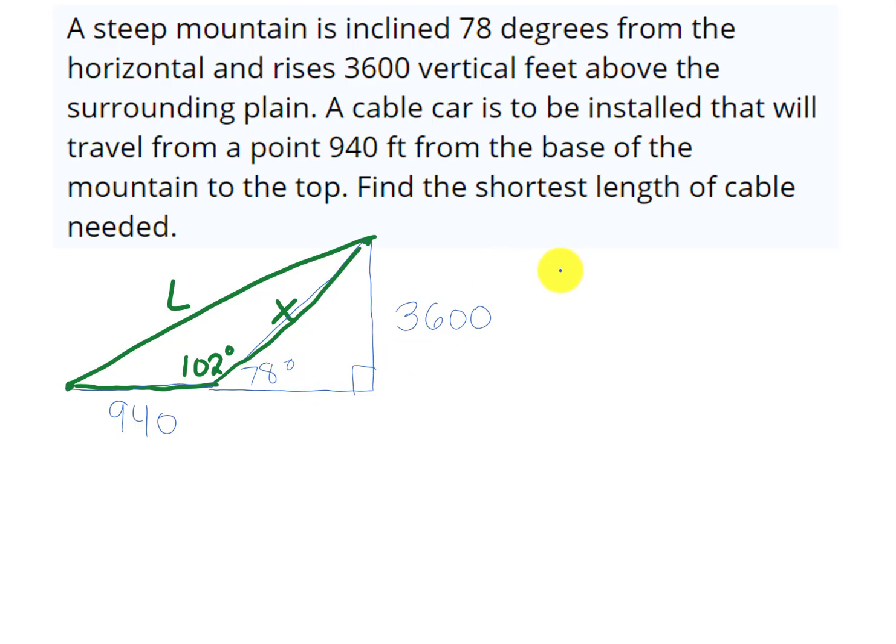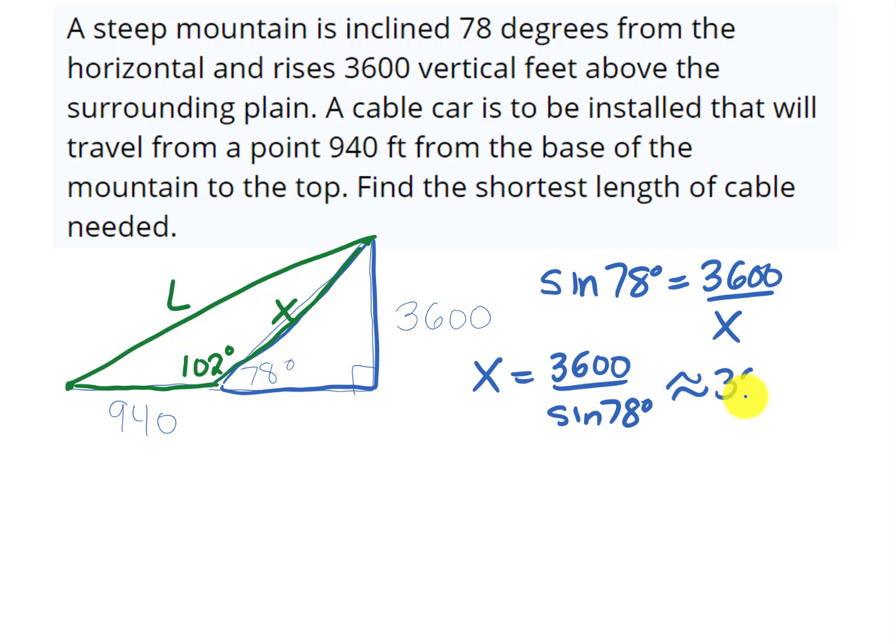So I'm looking at that triangle and sine of 78 degrees. Sine of 78 degrees is opposite which is 3600 over hypotenuse which is X. I can solve that for X and X would be 3600 divided by sine of 78 degrees. So I can put that in the calculator, 3600 divided by sine 78 degrees, and it looks like that is approximately 3680.426 feet.